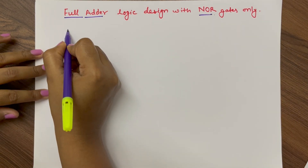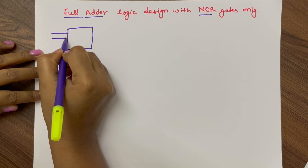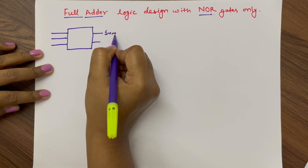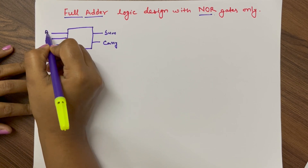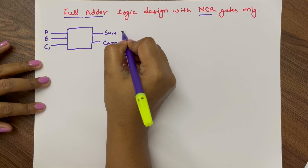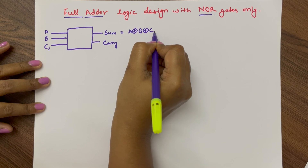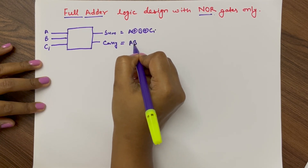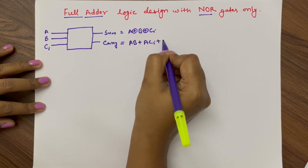A full adder is a combinational circuit that adds three 1-bit numbers and gives output as sum and carry. Let's say inputs are A, B, and CI. So output sum will be A XOR B XOR CI, and carry C_out will be AB + A·CI + B·CI.